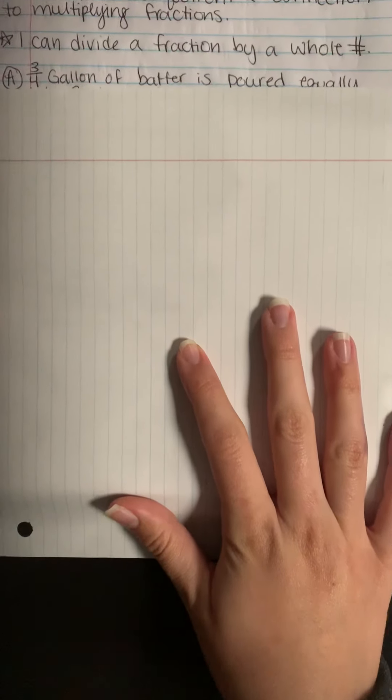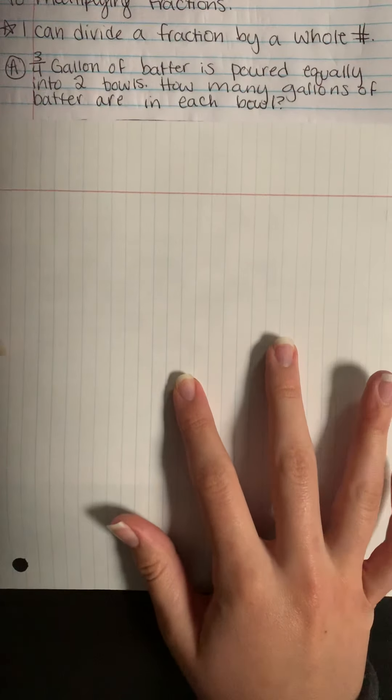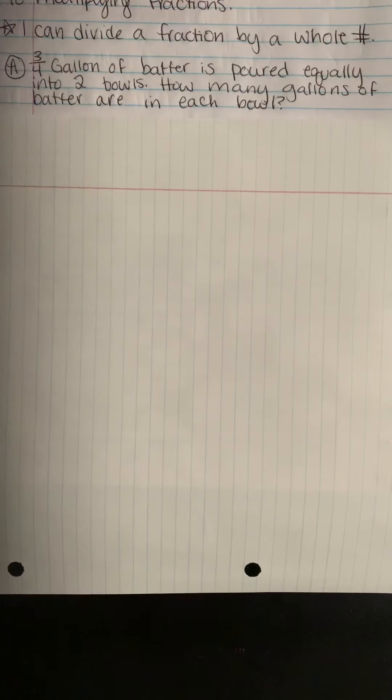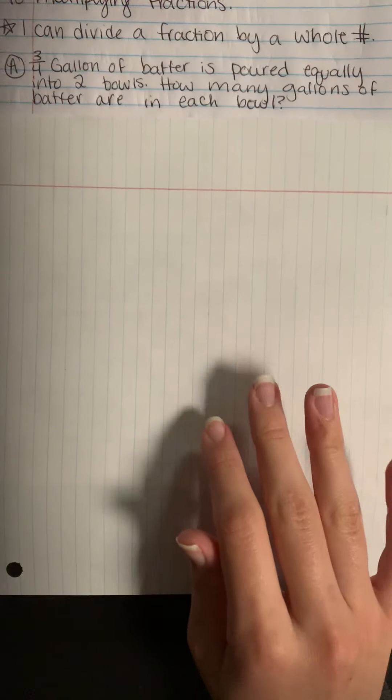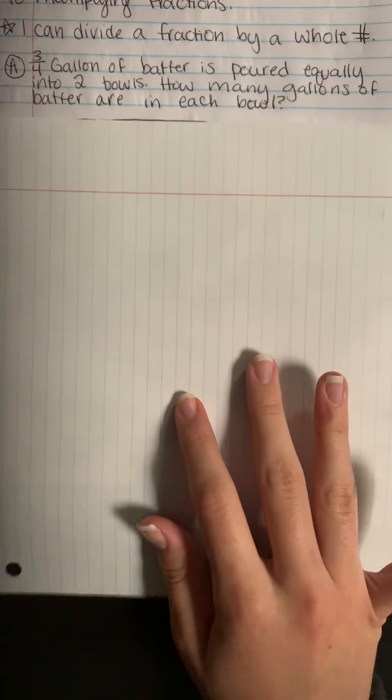Our first problem is talking about cooking, maybe pancakes or a cake. So three-fourths a gallon of batter is poured equally into two bowls. How many gallons of batter are in each bowl?